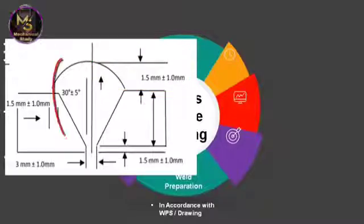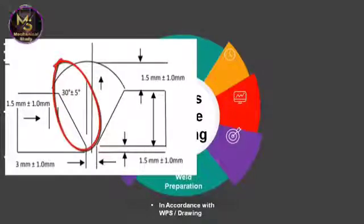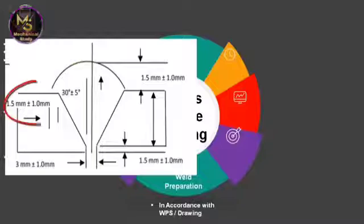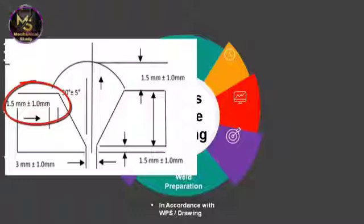The second dimension is bevel angle. According to this WPS, the bevel angle is 30 degrees with a tolerance of plus or minus 5 degrees, meaning it should be between 25 and 35 degrees. The third dimension is toe blending — it is mentioned as 1.5 mm with a tolerance of plus or minus 1 mm, so it should be between 0.5 mm and 2.5 mm.